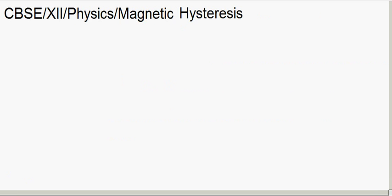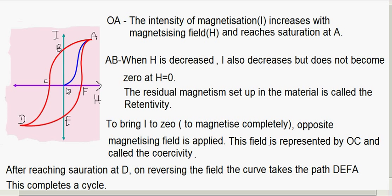A ferromagnetic substance, when kept in a magnetizing field, gets magnetized — it also becomes a magnet. If we increase the magnetizing field, as shown in the figure, when H is increased, I also increases. This is shown by the curve OA. So in the beginning, when the field is increased, the intensity of magnetization I also increases with the magnetizing field.